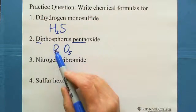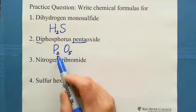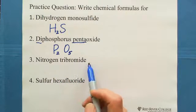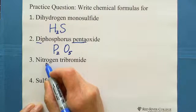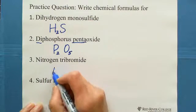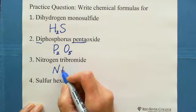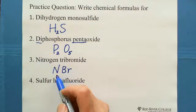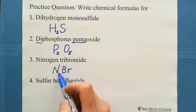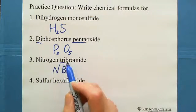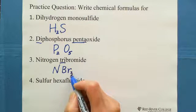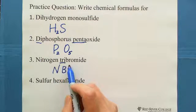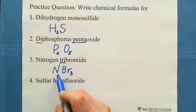So the formula for diphosphorus pentoxide is P₂O₅. The third one: nitrogen tribromide. Nitrogen is non-metal, bromine is non-metal. Write nitrogen, then bromine. Nitrogen has no prefix, meaning 1 — we don't need to write the 1. Tri means 3, so write subscript 3 matching the prefix tri. The formula for nitrogen tribromide is NBr₃.